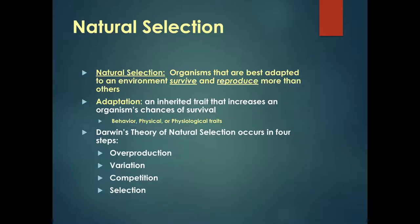Natural selection: organisms best adapted to the environment survive and reproduce more than others. Adaptation is an inherited trait that increases an organism's chance of survival — it can be behavioral (the organism's actions), physical (structure), or physiological. Darwin's theory of natural selection occurs in four steps: overpopulation, variation — which Ms. Nash covered — competition, and selection. Here at the Environmental and Education Center, we see how overpopulation keeps a species going.